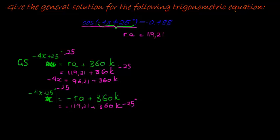And if I subtract 25 from here, what do I get? I get negative 144.21 plus 360 times k.